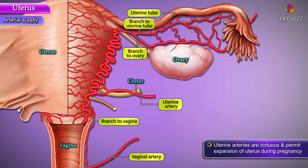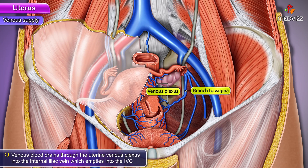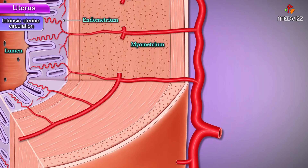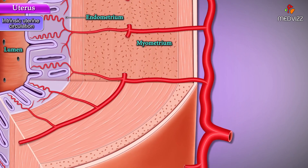The venous blood drains through the uterine venous plexus into the internal iliac vein, which empties into the inferior vena cava. Intrinsic uterine circulation: